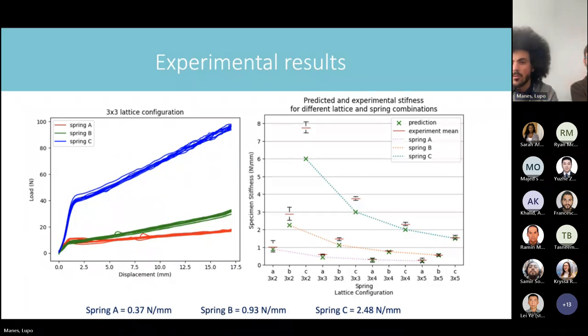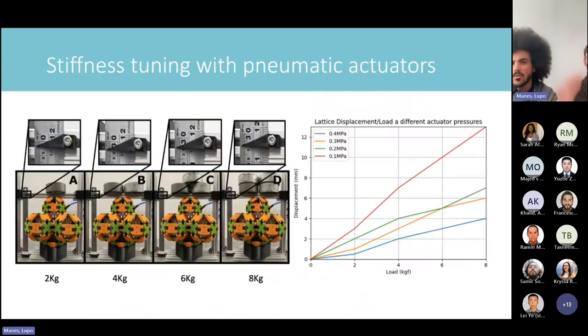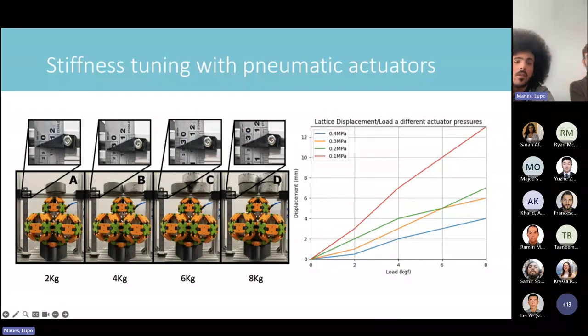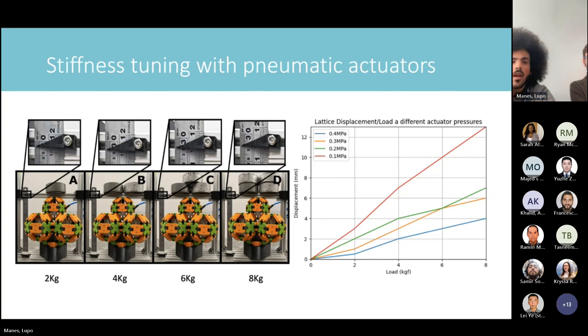Now that we know we have a model that we can control the stiffness, we decided to create a proof of concept for showing how we could have variable stiffness on the go. We replaced some of the springs with pneumatic actuators and by varying the pressure, we can vary the stiffness of these actuators. We just recorded the deformation as we progressively load the structure. Here on the right, you can see the results for different pressure levels. For all of them, it's basically linear. And as we increase the pressure, we also increase the stiffness of the entire device.